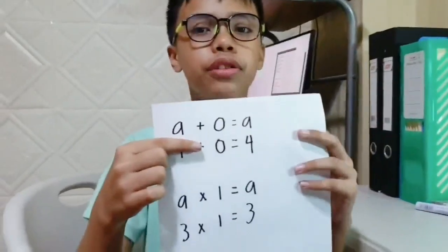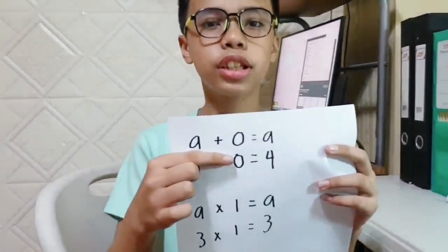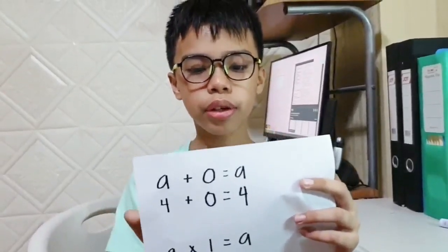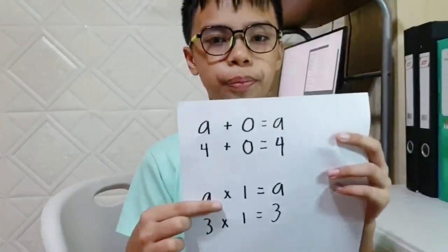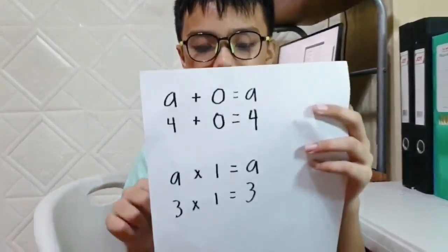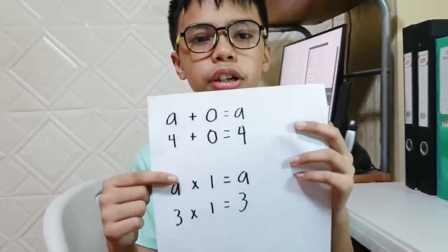Next is Identity property. Identity property is where the number keeps its identity after the operation is done. This is only applicable in addition and multiplication. For addition, the sum of 0 and any number is the number. For example, A plus 0 equals A; 4 plus 0 equals 4. For multiplication, the product of 1 and any number is the number. Like A times 1 equals A; 3 times 1 equals 3. In identity property, it will just come back to your identity.